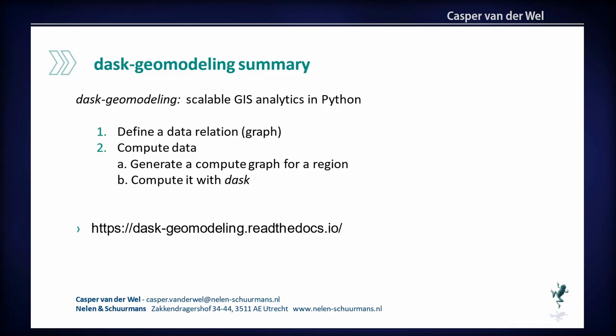To summarize how it works: first you define this data relation, which you can save and serialize to JSON to store in a database — which is what we do in Lizard. Then at the moment you compute, you just get this JSON or data relation back and use it for computation. This way you can do streaming processing of raster and vector data.